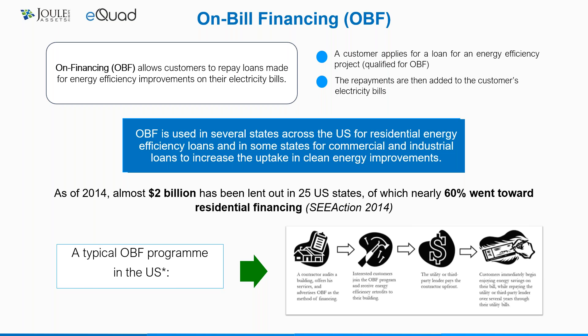A contractor audits the building and offers an energy efficiency service. If the customer accepts, they apply to the program. If they're in line with the program's requirements, a third-party lender or the utility in some cases pays upfront for the project so that customers can start enjoying the benefits straight away.